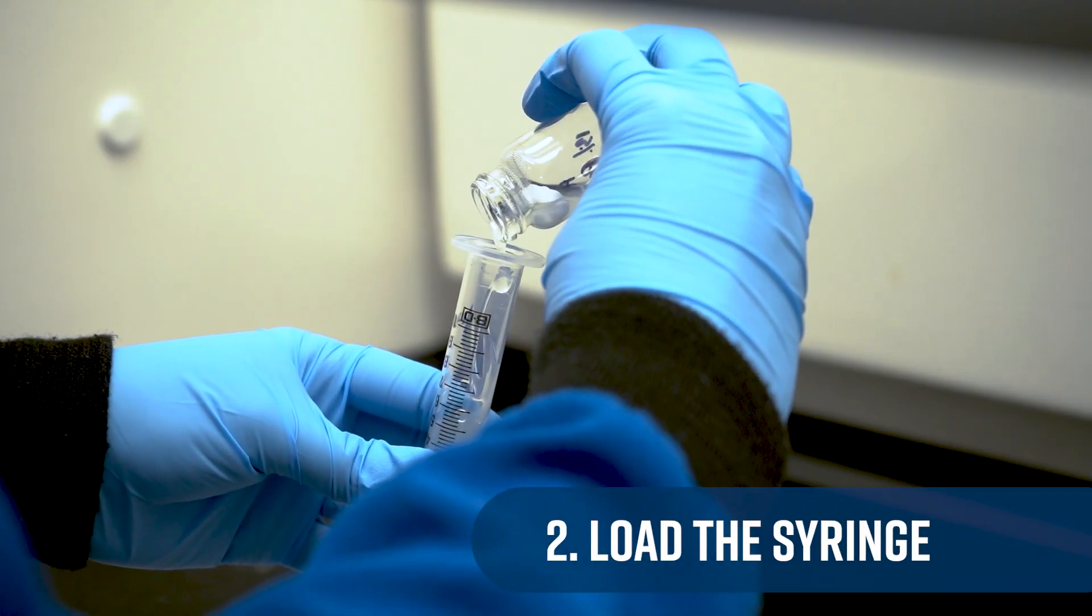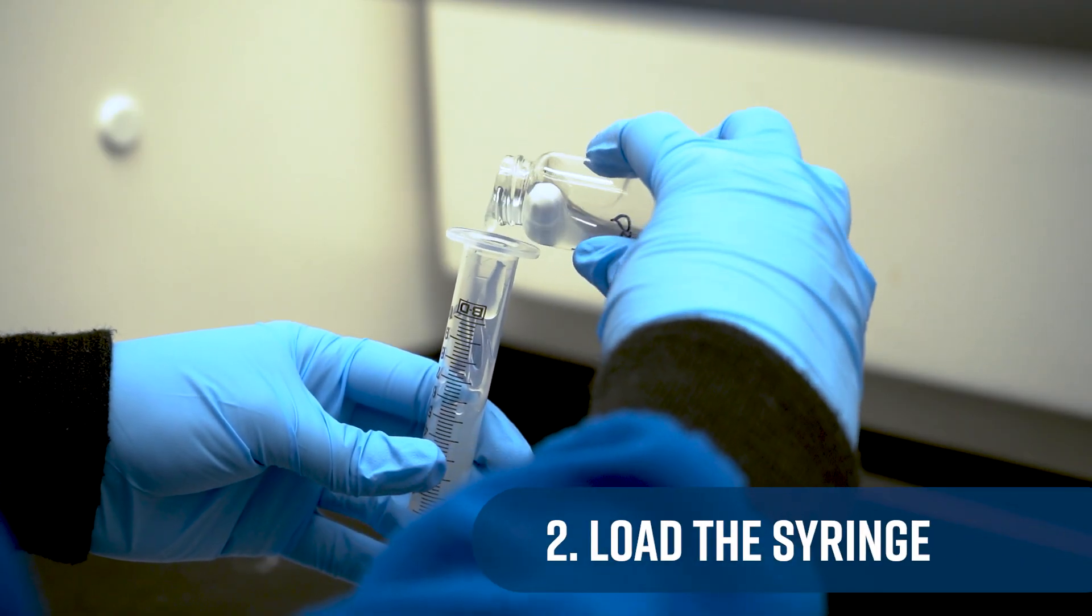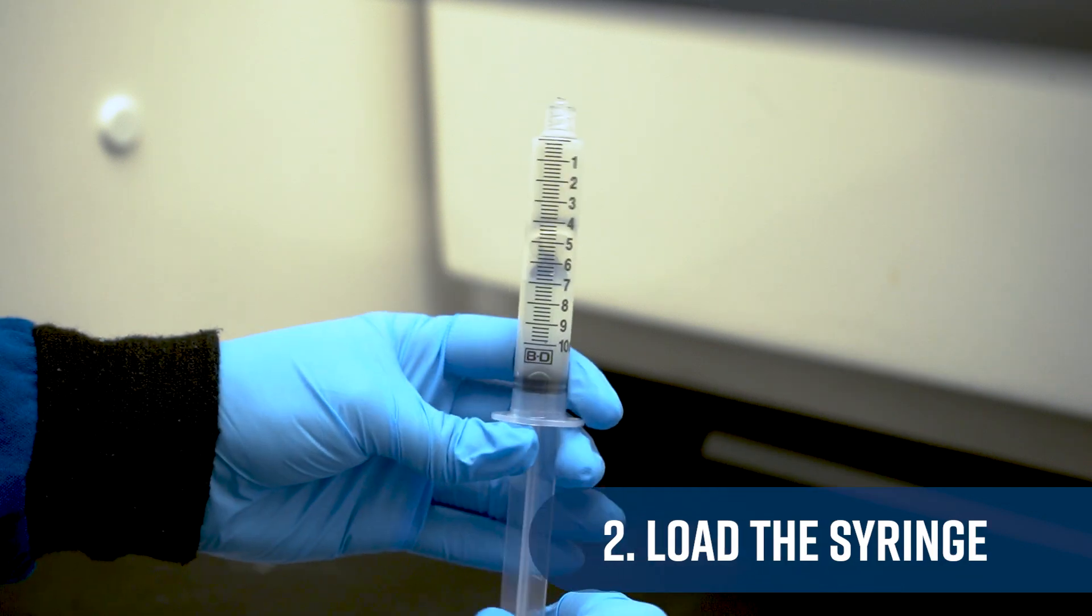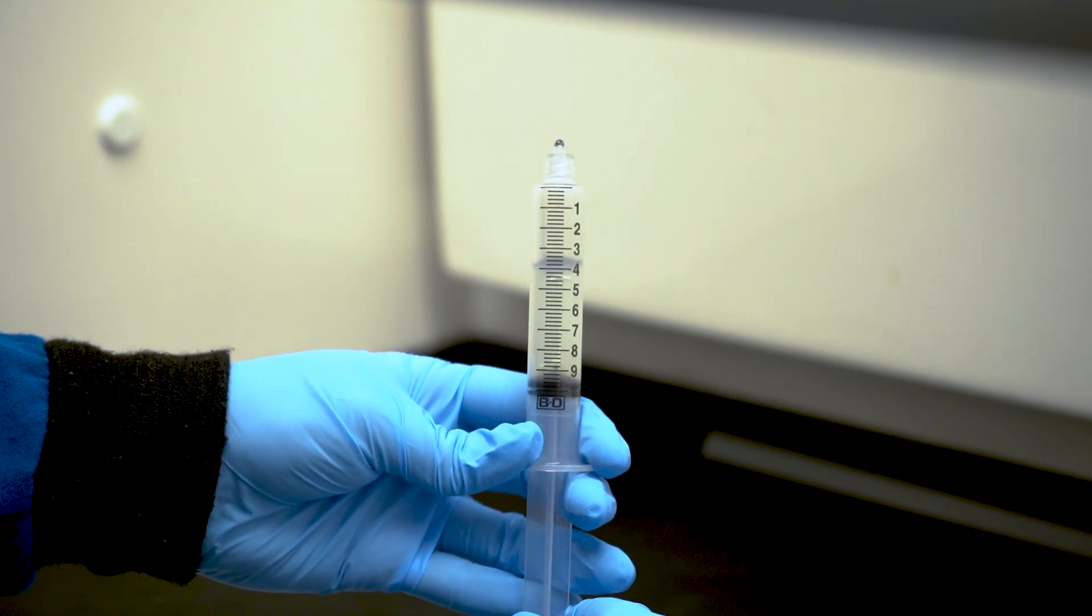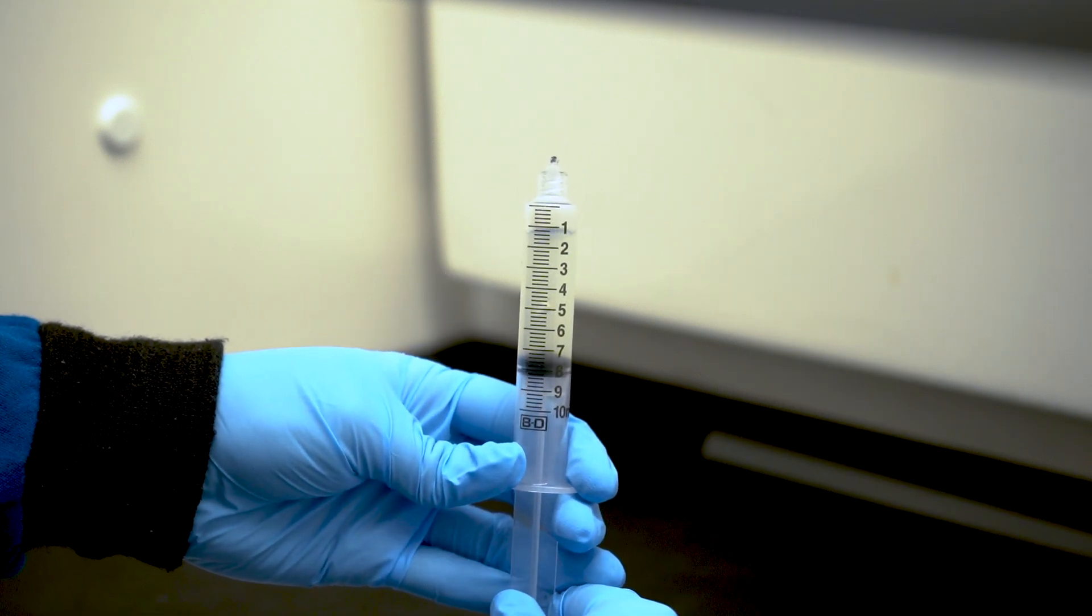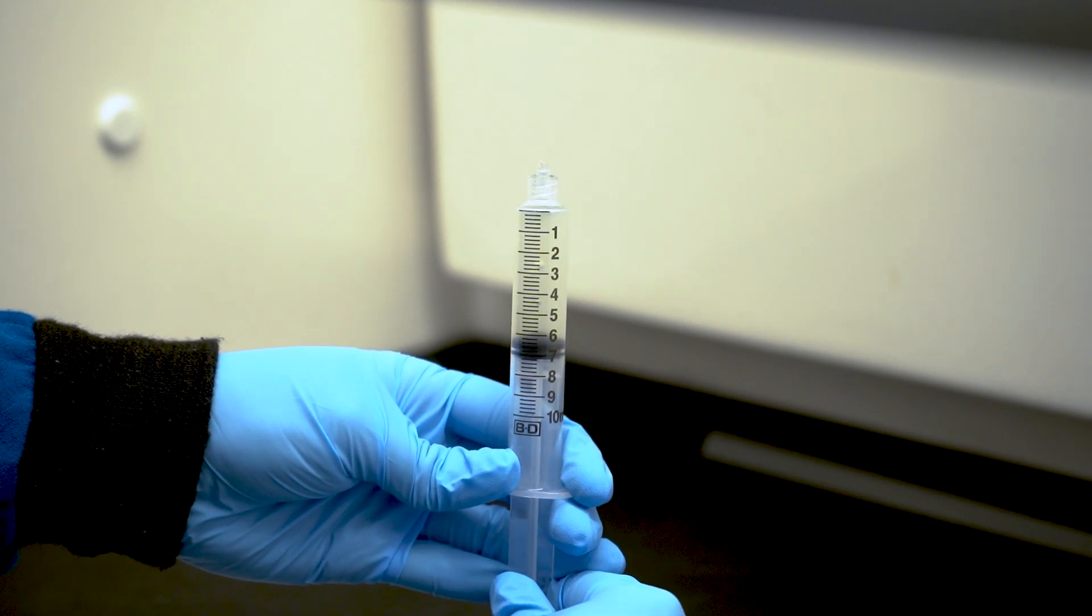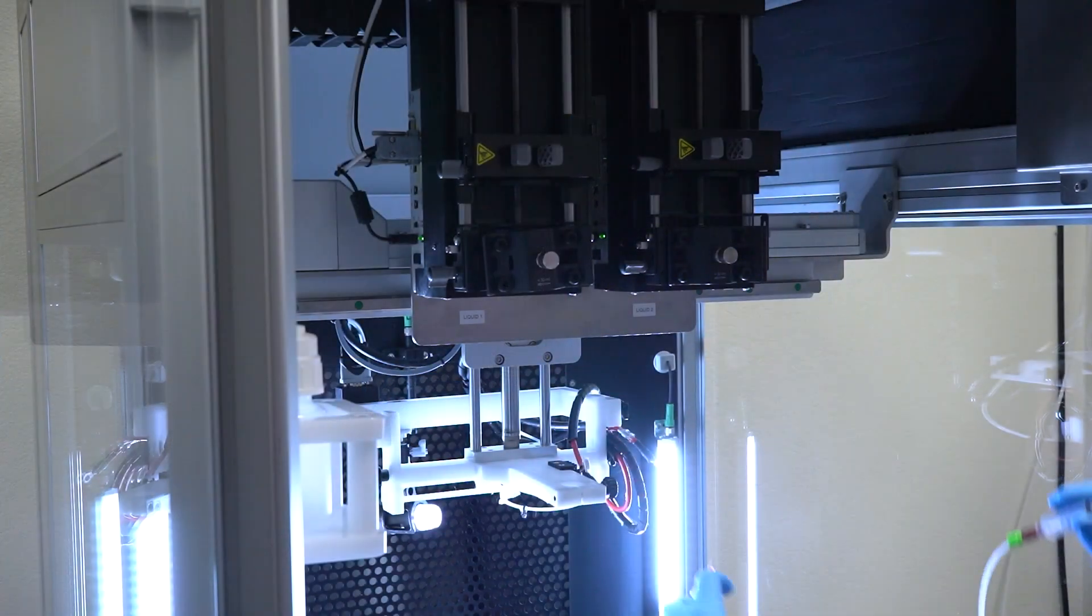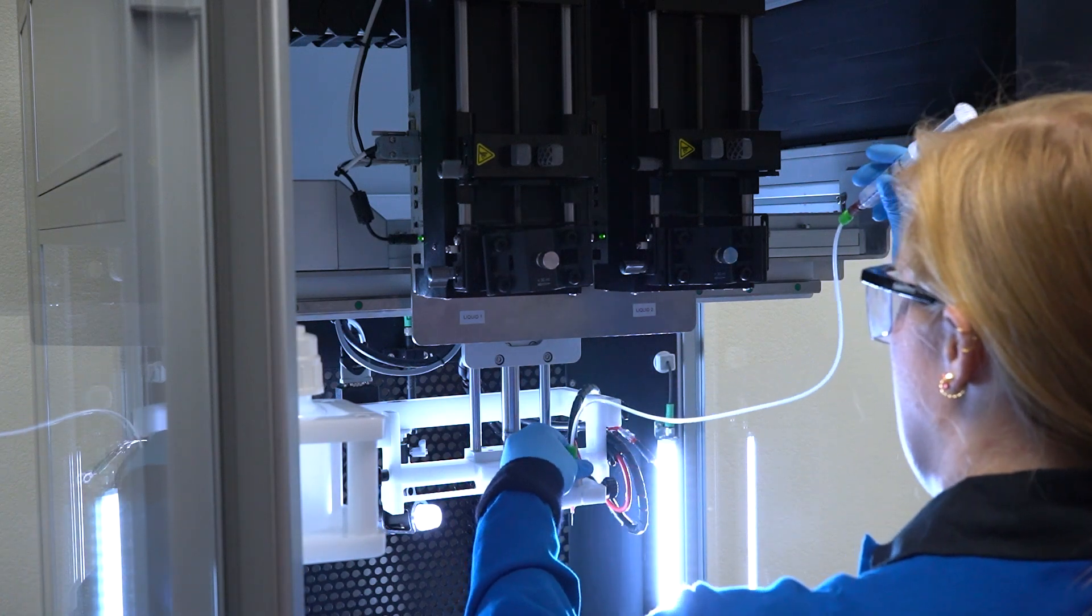Step two, load the syringe. Once prepared, carefully load your solution into a syringe that can be attached to syringe pump. Make sure there are no air bubbles, as bubbles can act as insulators in your setup and negatively affect your electrospinning. You can then mount the syringe into the syringe pump.